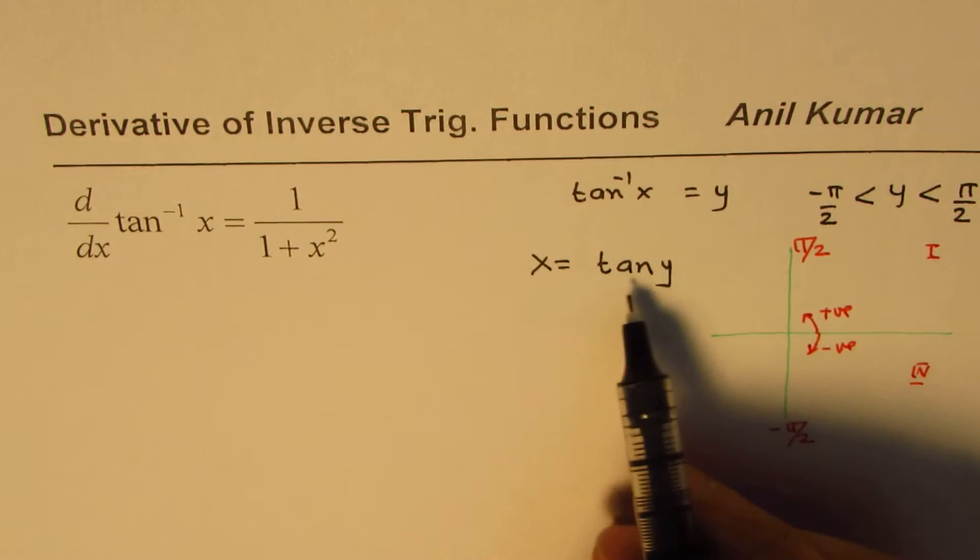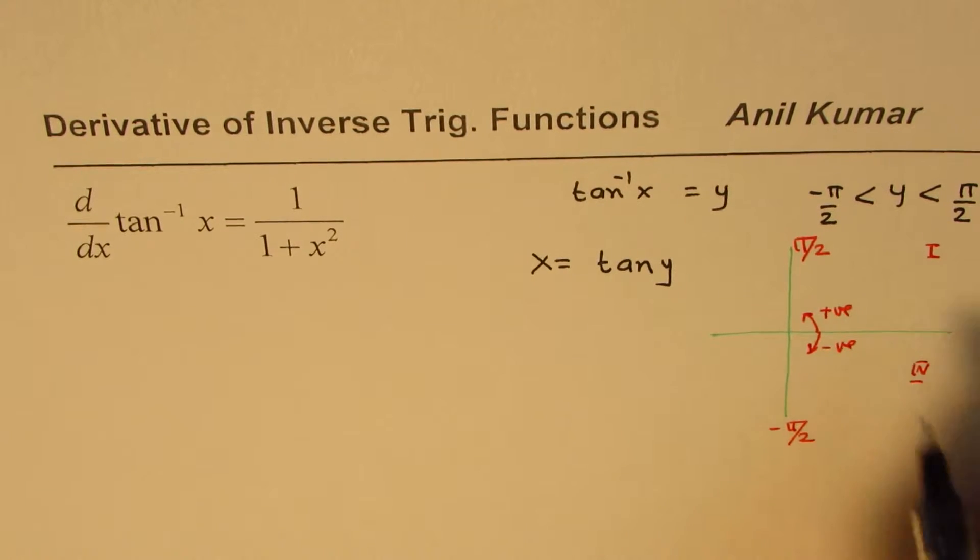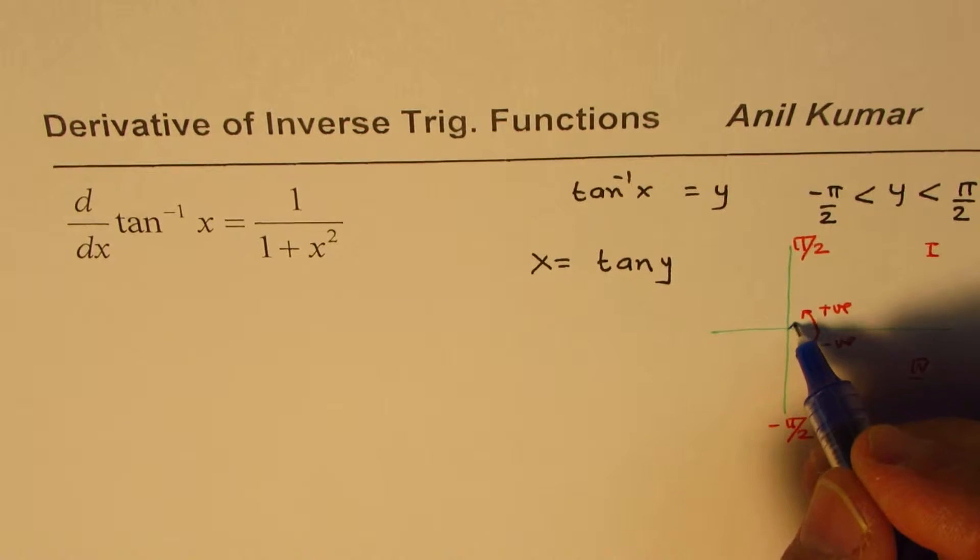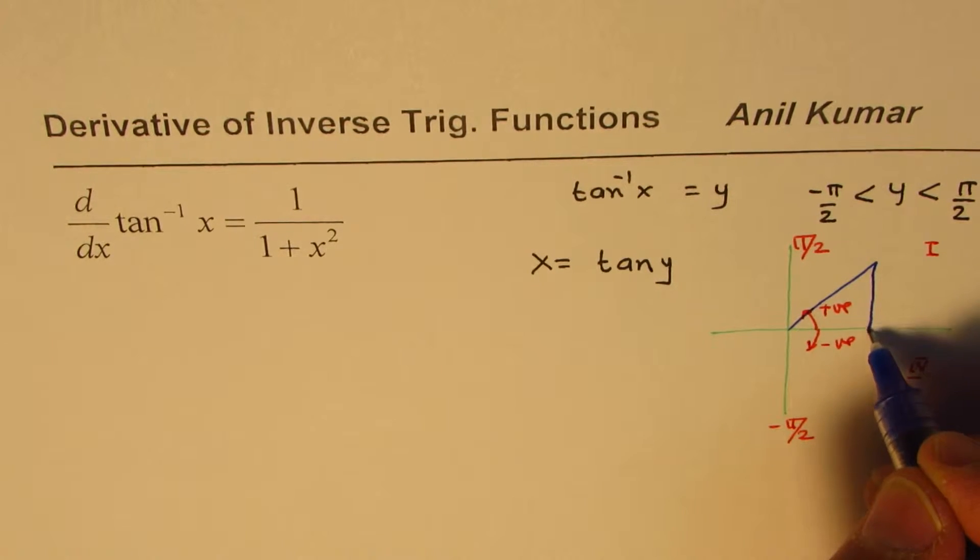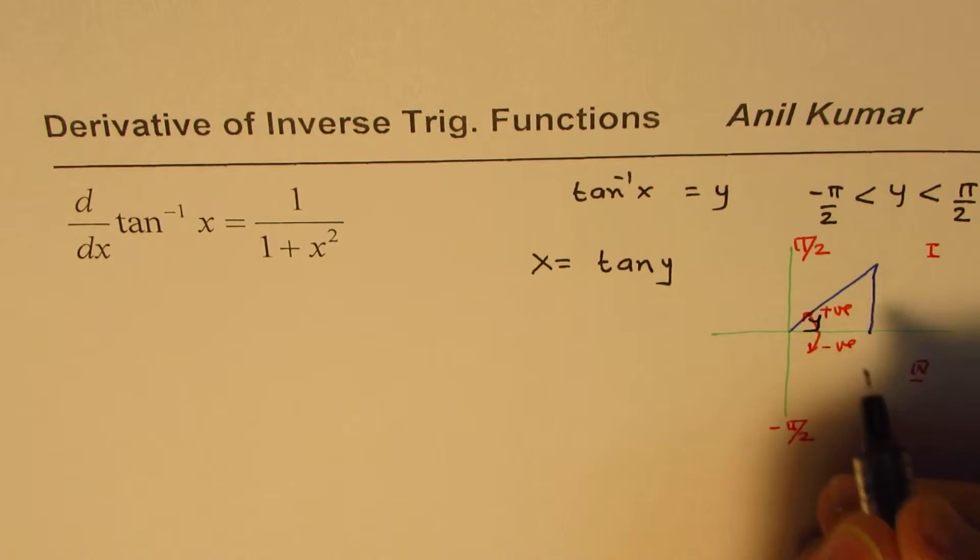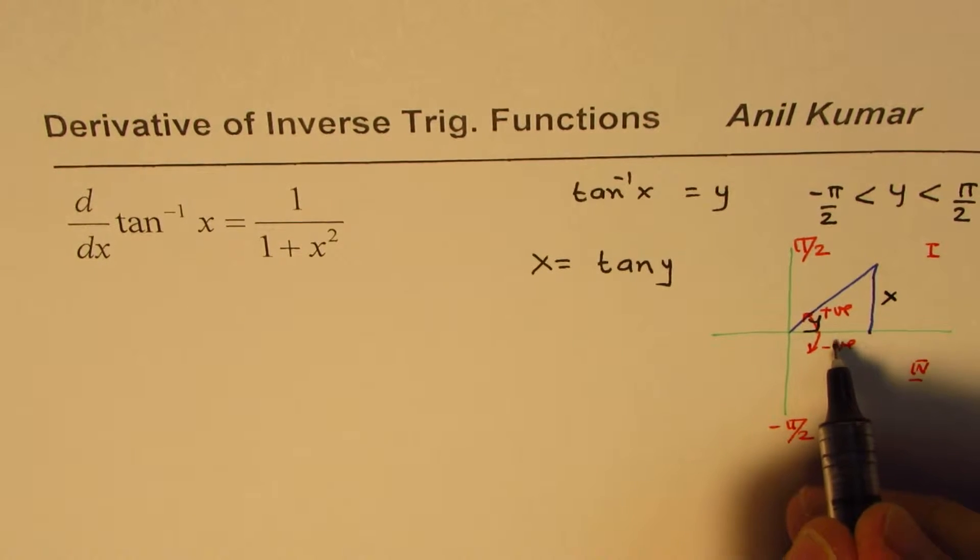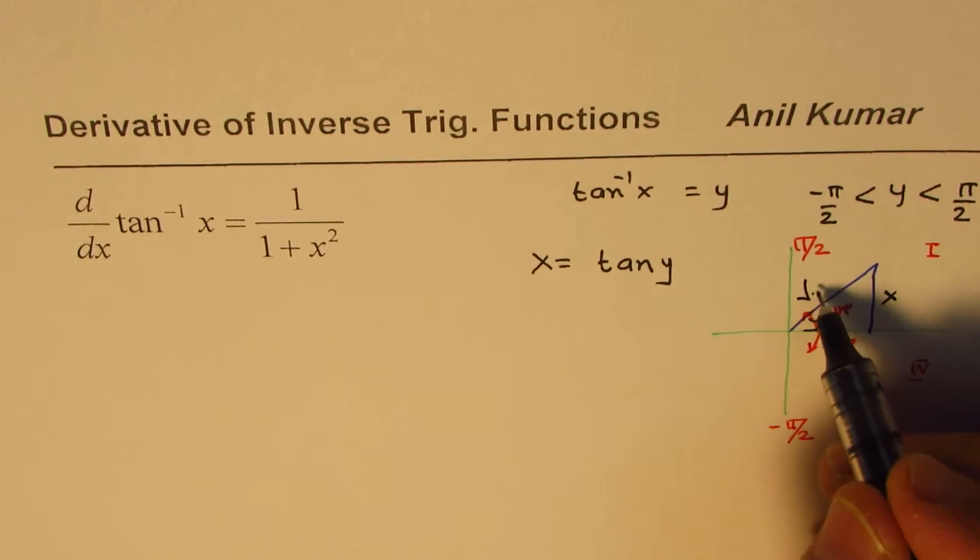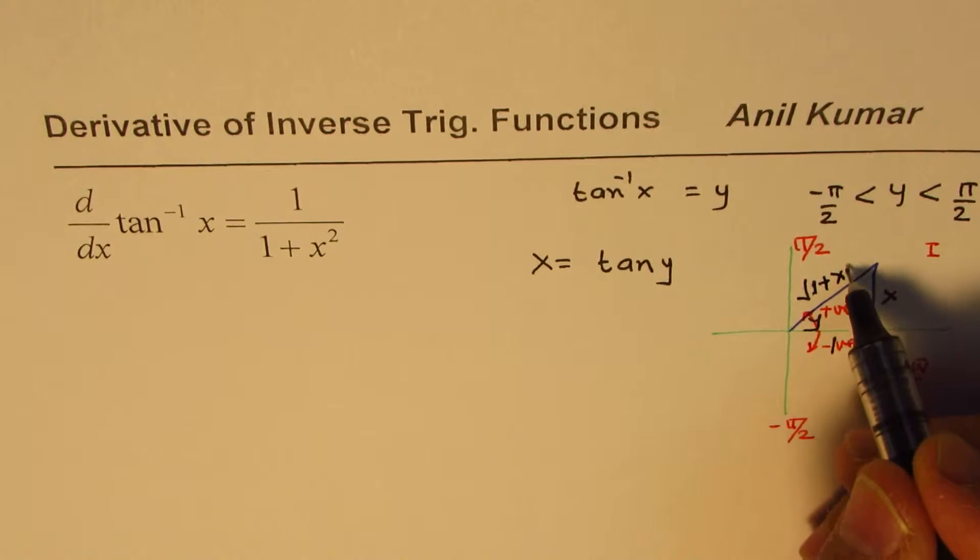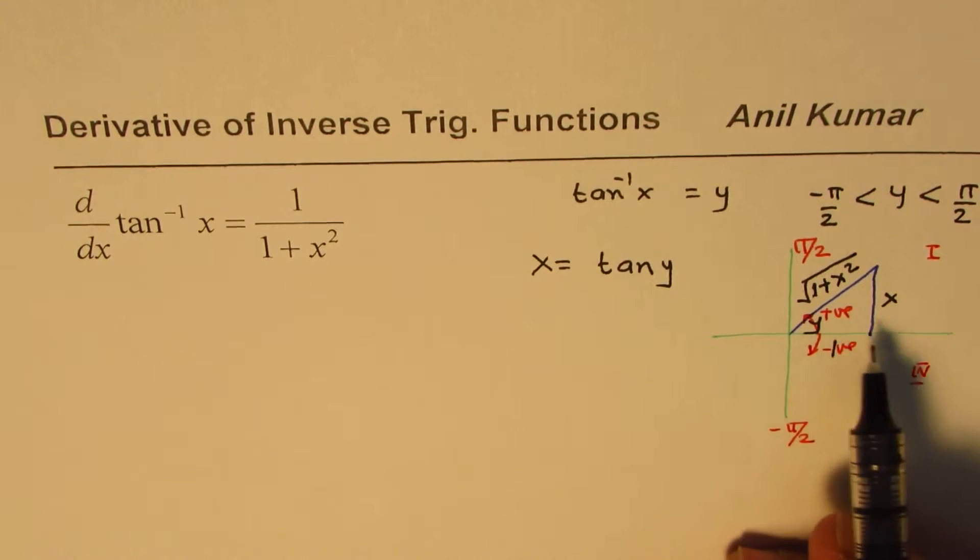I could show it in the form of a triangle where the angle is y. Let's make a positive triangle in quadrant 1, and let's say this angle is y for us. Tan y is x means the ratio of these two sides is x, x over 1. And that gives you hypotenuse should be square root of 1 plus x square. Sum of these two squares, square root. So that's the triangle we'll be working with.